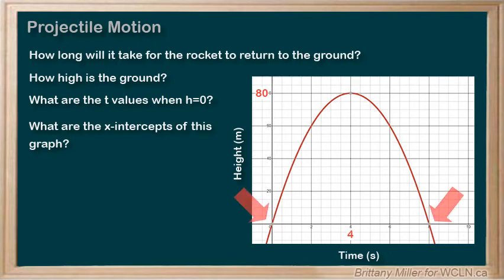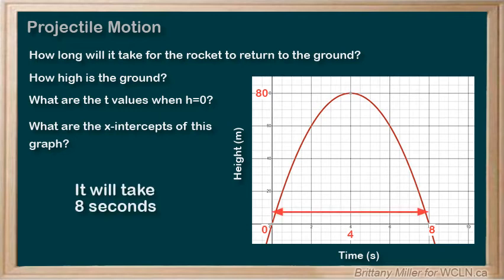We have two of them here, t equals 0 and t equals 8. That first result, t equals 0, is at the beginning, before the rocket has launched. So, it will take 8 seconds for the rocket to reach the ground again.